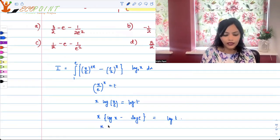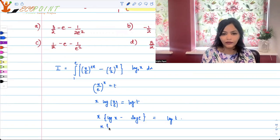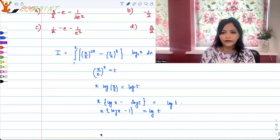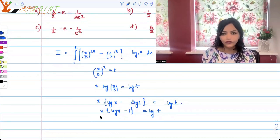And that means x multiplied by log x minus 1, log e is 1, is equal to log t. So which means that if I differentiate on both the sides, what am I going to get?